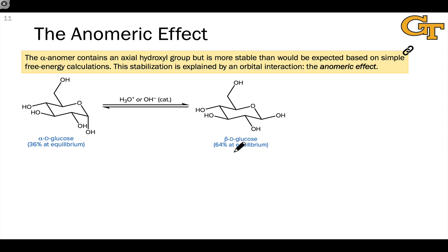If you do the math, we would expect something more along the lines of 89% beta-D-glucose with the equatorial hydroxyl and only 11% alpha-D-glucose with the axial hydroxyl group.